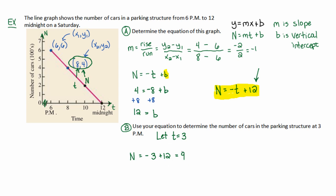And, of course, what we need to really do is interpret this result. n is 9. It doesn't mean there's 9 cars. Remember, the number of cars is in hundreds. We have 900 cars at 3 p.m.